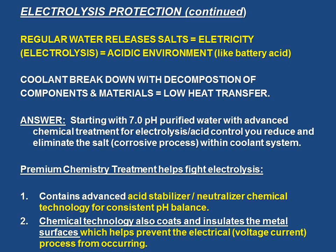The answer is not letting that stuff into our system in the first place. You start with 7.0 pH purified water with an advanced chemical treatment. This chemical science — it's a variety of chemistries — will help control acidity and prevent electrolysis from starting. When you eliminate the salts and use proper chemistry, you greatly reduce and eliminate the corrosive process within the coolant system.